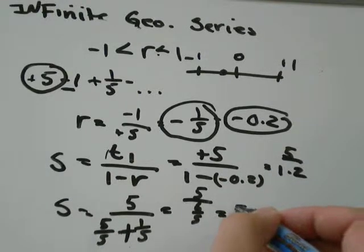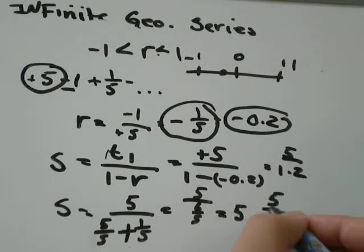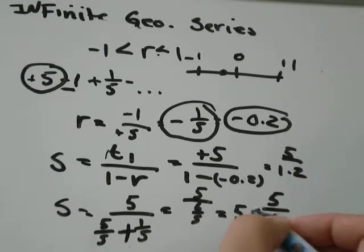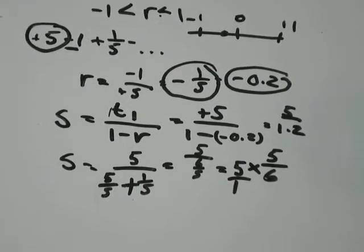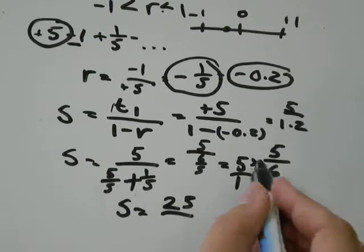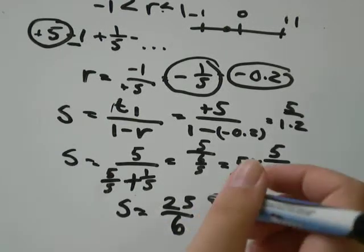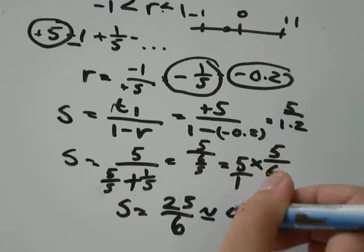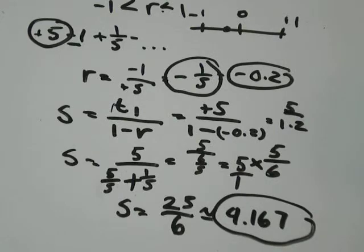Dividing by a fraction is the same as flip the fraction. So 6 over 5 becomes 5 over 6. Change it from divide to multiply. So the sum would be 5 times 5 is 25 over 1 times 6. And 25 divided by 6 is approximately equal to 4.167. So we found that the sum of this infinite convergent geometric sequence is about 4.167.